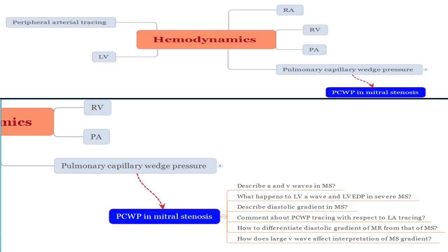Let's mind map today's topic. We are going to be talking about pulmonary capillary wedge pressure, which falls under the broad topic of hemodynamics, and we're going to take a small subset of it called PCWP in mitral stenosis. There are around 6 questions for today, so go through these questions, try to answer them, and then come back to revise after the video.